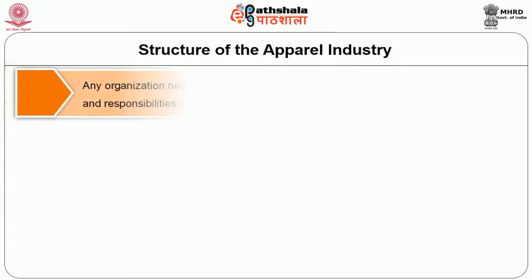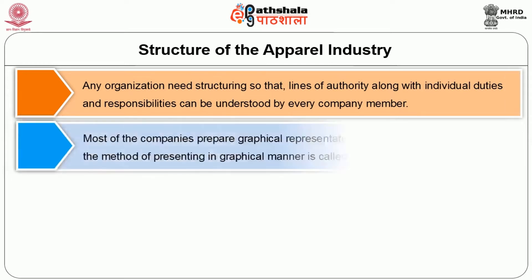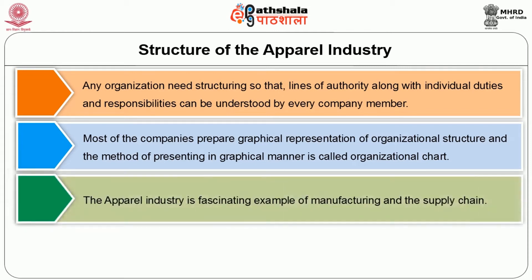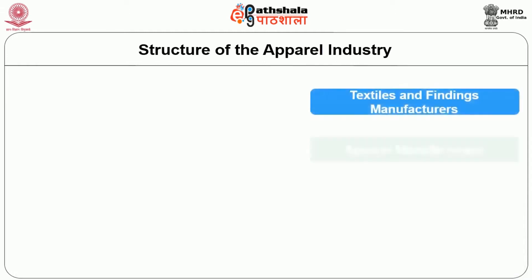Structure of the apparel industry. Any organization needs structuring so that lines of authority along with individual duties and responsibilities can be understood by every company member. Most companies prepare a graphical representation of organizational structure, and the method of presenting it in a graphical manner is called an organizational chart. The apparel industry is a fascinating example of manufacturing and the supply chain. The supply chain of the apparel industry commences from farming of cotton in the cotton field, manufacturing man-made fiber, to selling clothes in retail stores to the consumer.